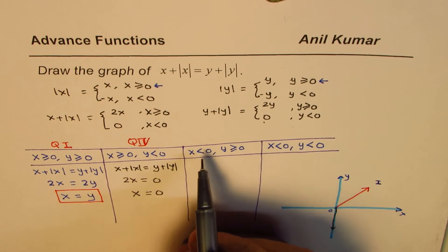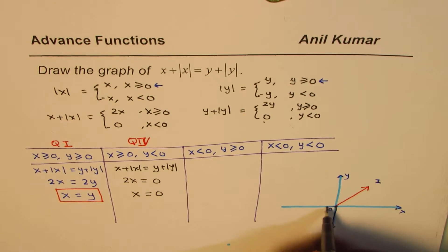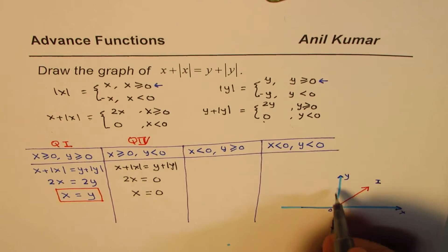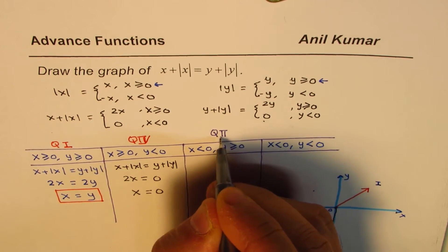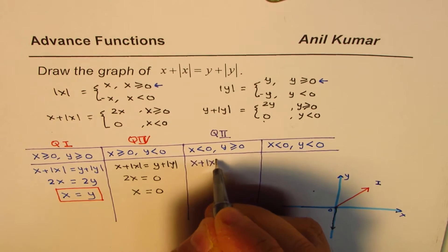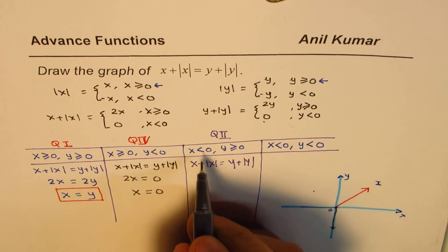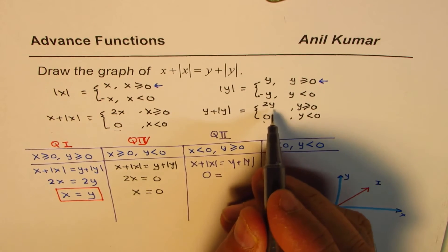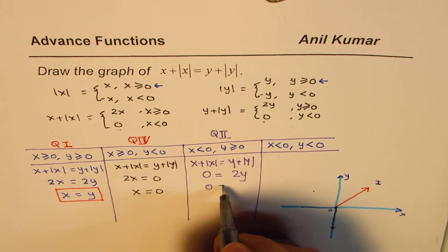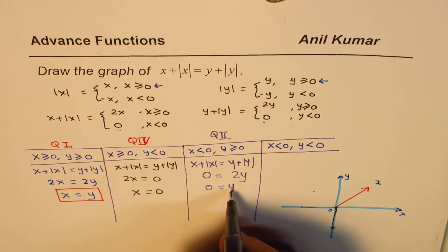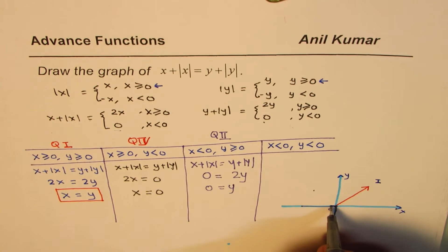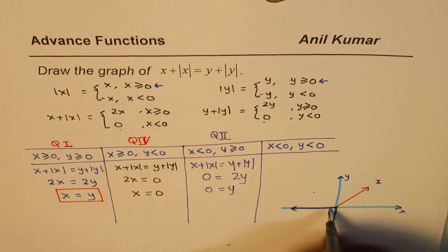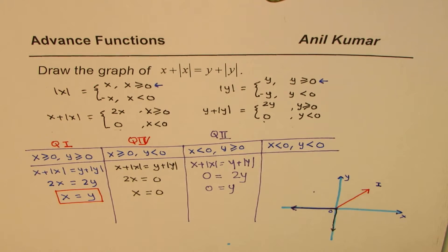Now for the third part: x is less than 0 and y is greater than or equal to 0, so we are working in quadrant 2. If x is less than 0, then x plus absolute x is 0. If y is greater than or equal to 0, then y plus absolute y is 2y. So we get 0 equals 2y, meaning y equals 0, which is the x-axis going negative.